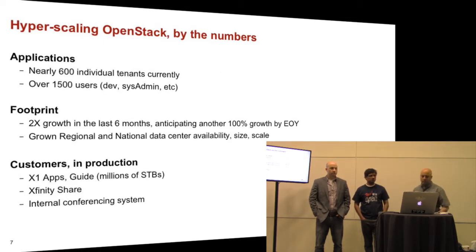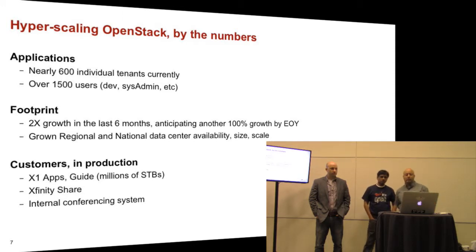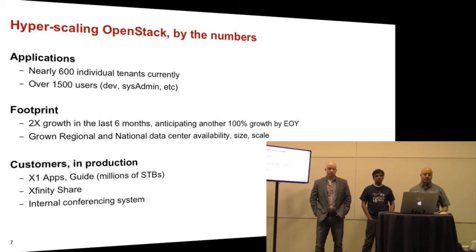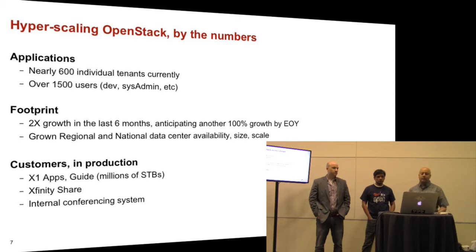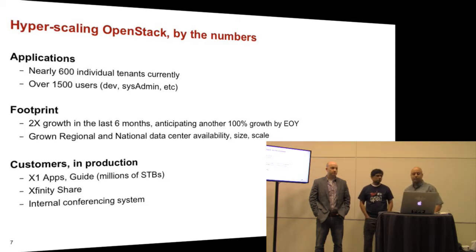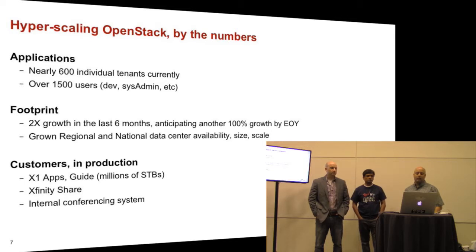In terms of scale, we currently have 600 projects or individual tenants on the cloud — all internal projects and products — with about 1,500 engineers accessing and deploying things. Our footprint has doubled in the past month, we anticipate another doubling by end of year, and we keep adding more sites as well as growing our national data center capacity.